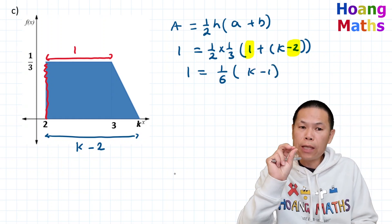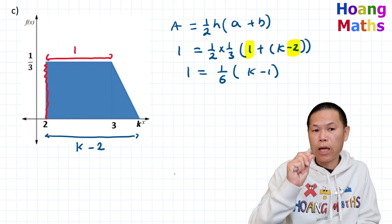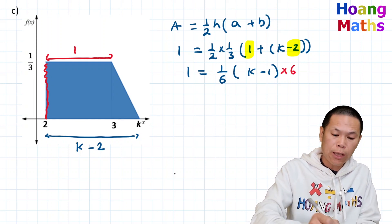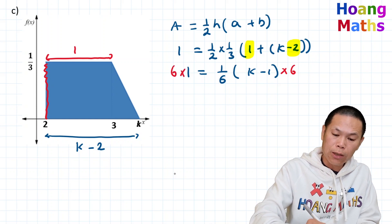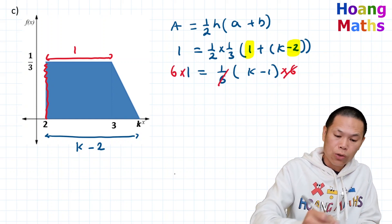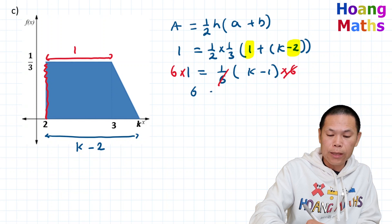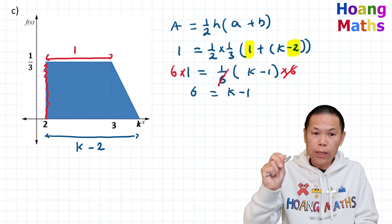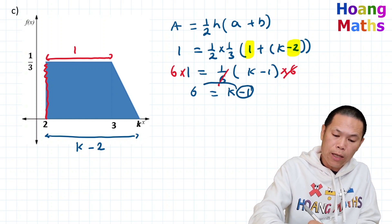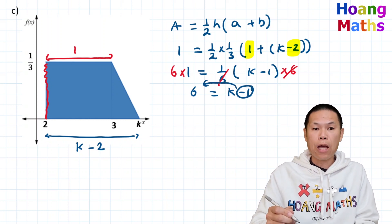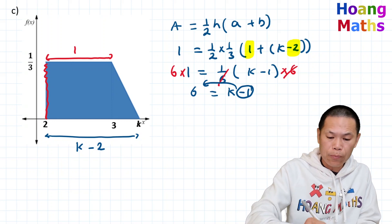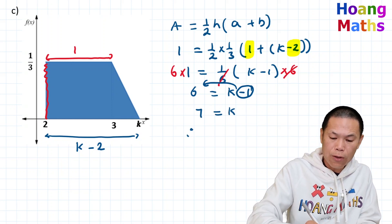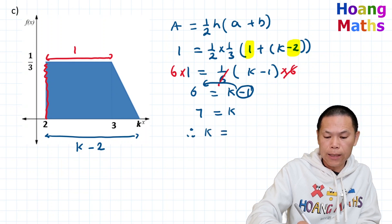To solve this, I multiply both sides by six to get rid of the fraction. That gives six equals k minus one. Moving the one to the other side: six plus one equals seven. So therefore k equals seven.